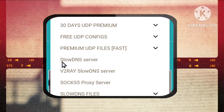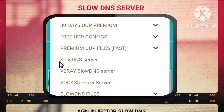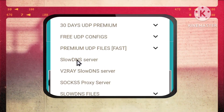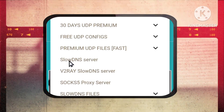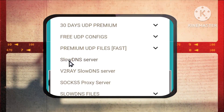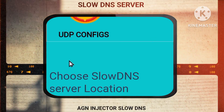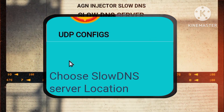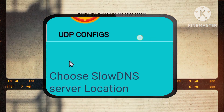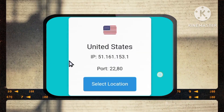Step 3: Selecting the Slow DNS Server. From the menu, select the Slow DNS Server option. This will lead you to the section where you can configure your very own Slow DNS Server, a powerful tool for bolstering your online security.